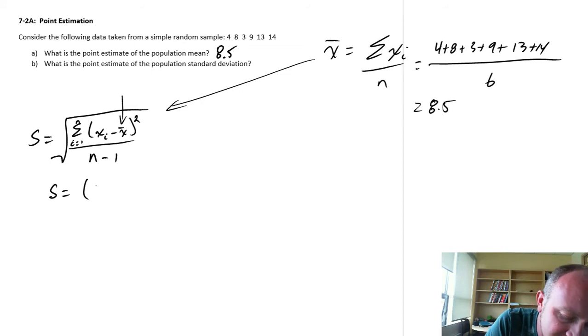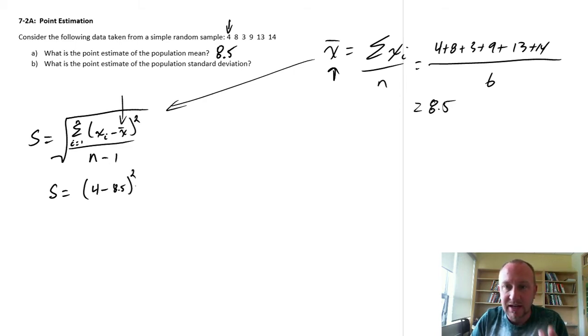So that's individual observations. This is starting here, this is 4 minus that x bar, our point estimate of the mean. So it's 4 minus 8.5 squared. And we're taking all of these squared deviations and adding them up.